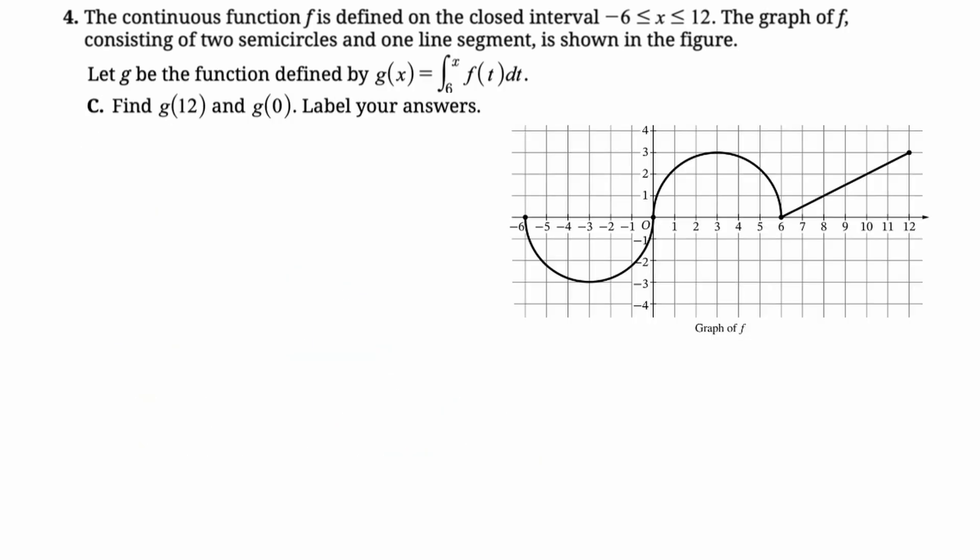So we want to find g of 12 and g of 0, and we want to label our answers. They put a lot more directions in the questions this year, probably because it's digital for the first time. So this is just an area question. g of 12 is going to be the integral from 6 to 12 of f of t dt, and we're going to go to the graph of f. From 6 to 12, we get this region, and that's a triangle, so it's 1 half base times height. So the base here is 6, and the height is 3, and then you double check that.